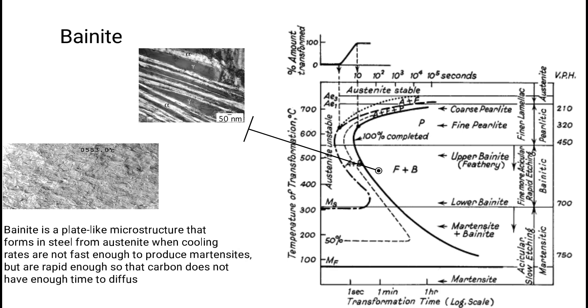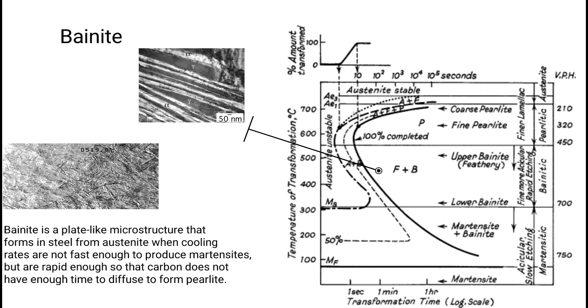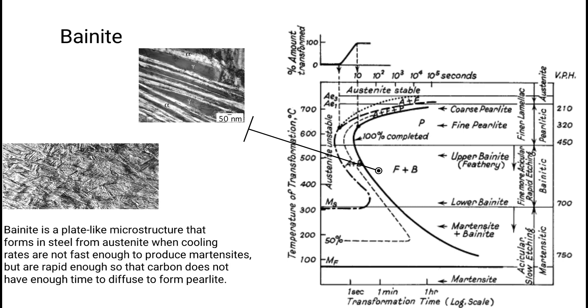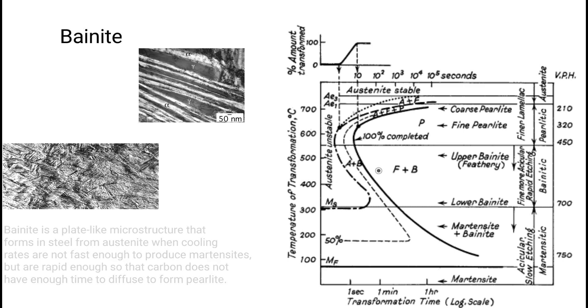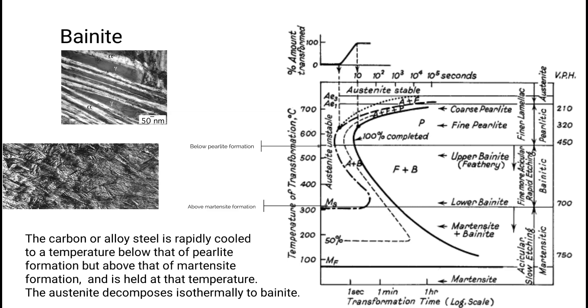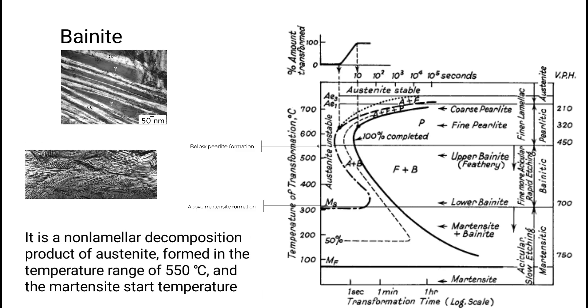Bainite is a plate-like microstructure that forms in steel from austenite when cooling rates are not fast enough to produce martensite but are rapid enough so that carbon does not have enough time to diffuse to form perlite. The carbon or alloy steel is rapidly cooled to a temperature below that of perlite formation but above that of martensite formation and is held at that temperature. The austenite decomposes isothermally to bainite.